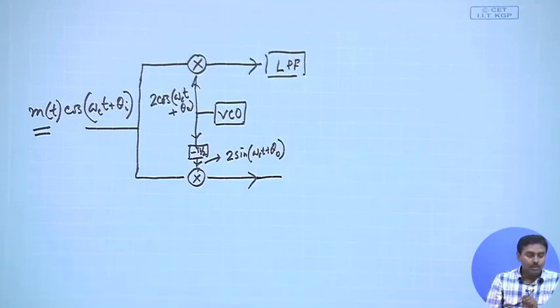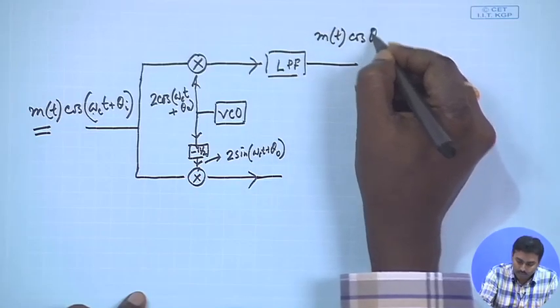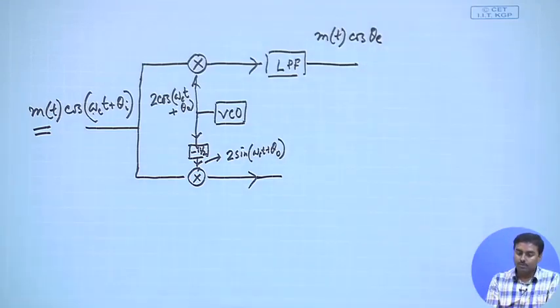After multiplication, there will be sum and difference terms. Since we have frequency matching, we focus on phase. There will be a 2ωc term and a (θi - θo) term. The low pass filter removes the 2ωc term, leaving m(t)·cos(θe), where θe is the difference of the two phases and is a function of t.